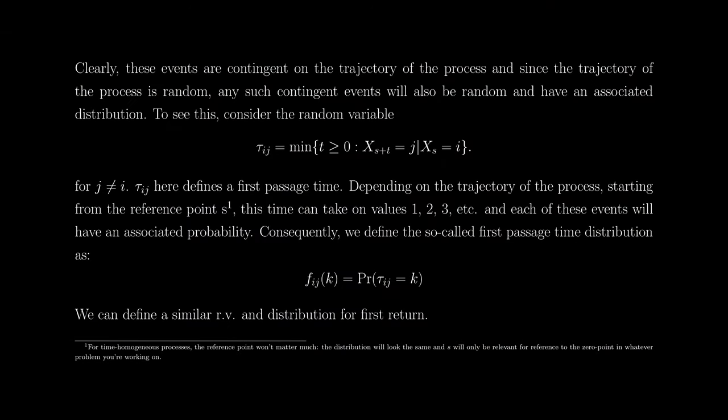These events are contingent on the trajectory of the process. Since the trajectory of the process is random, any such contingent events will also be random and have an associated distribution. We define tau_ij to be the minimum number of steps t ≥ 0 such that the process is in state j at time s+t, given that it started in state i at time s. Tau_ij clearly defines a first-passage time variable in terms of the number of steps.